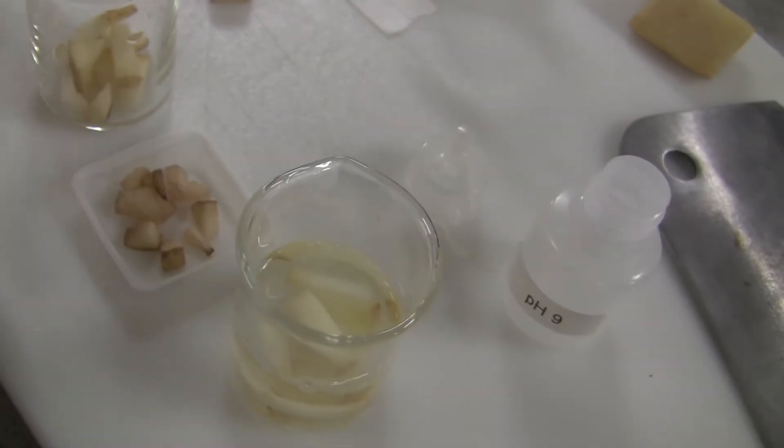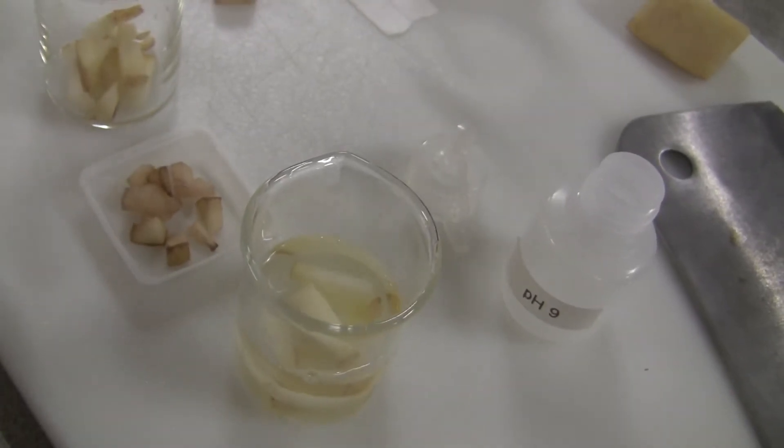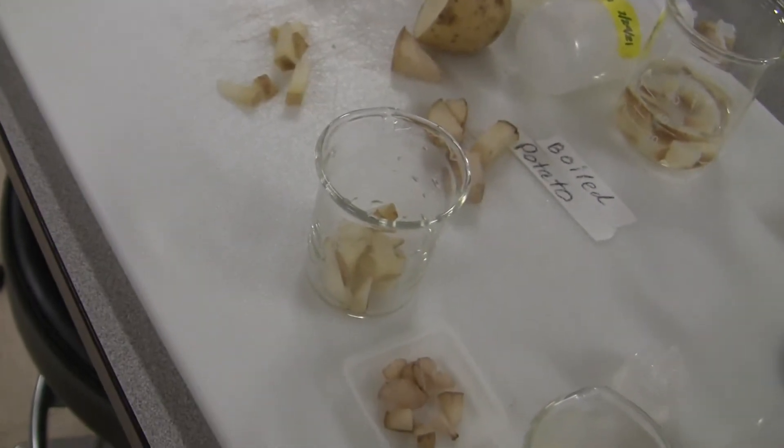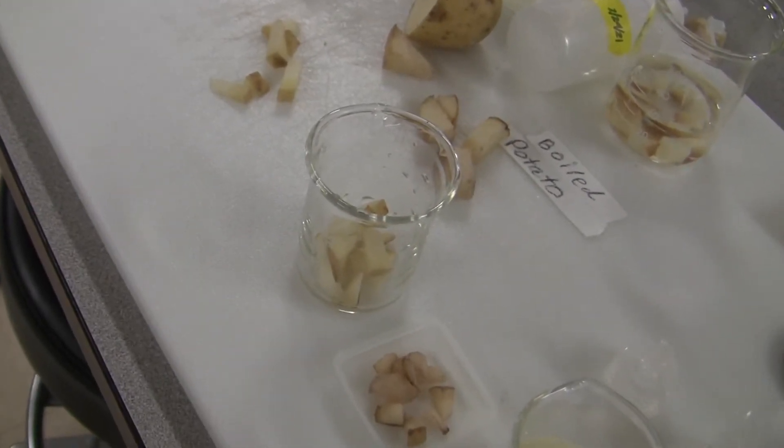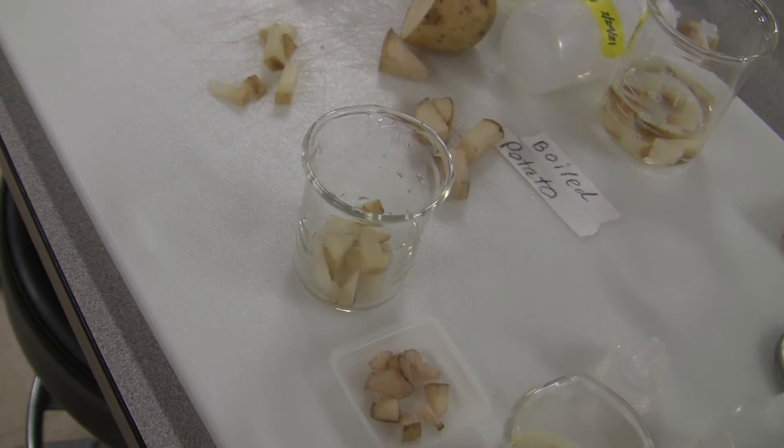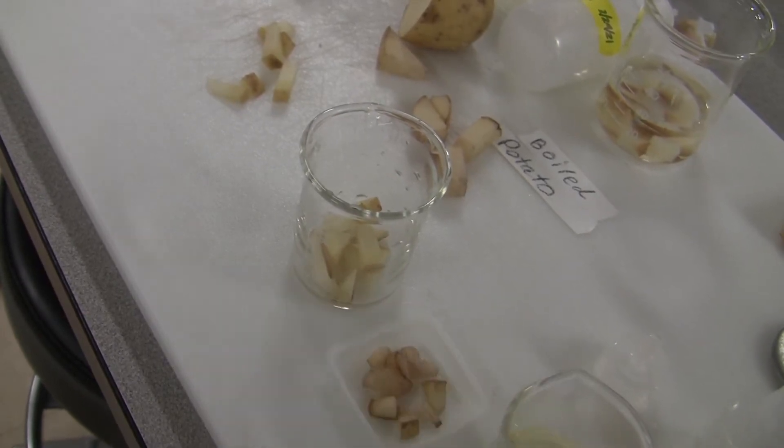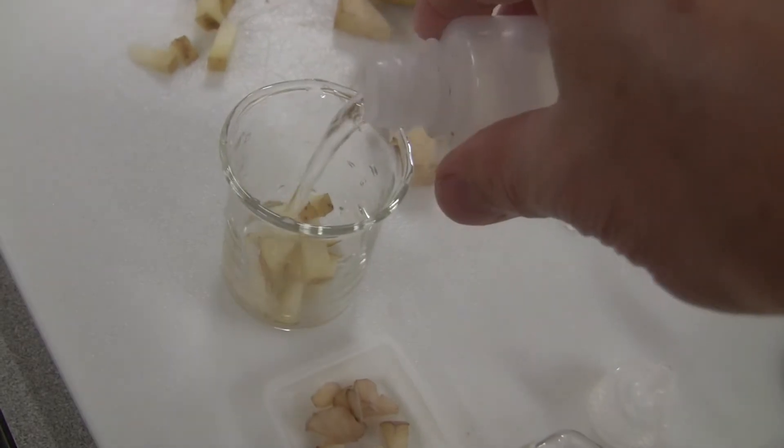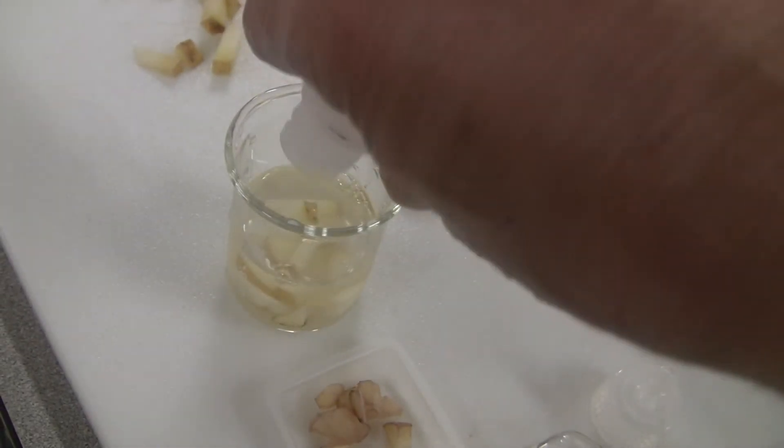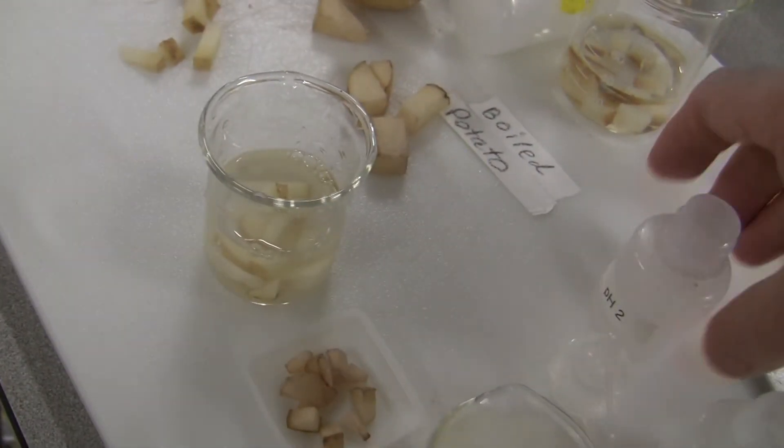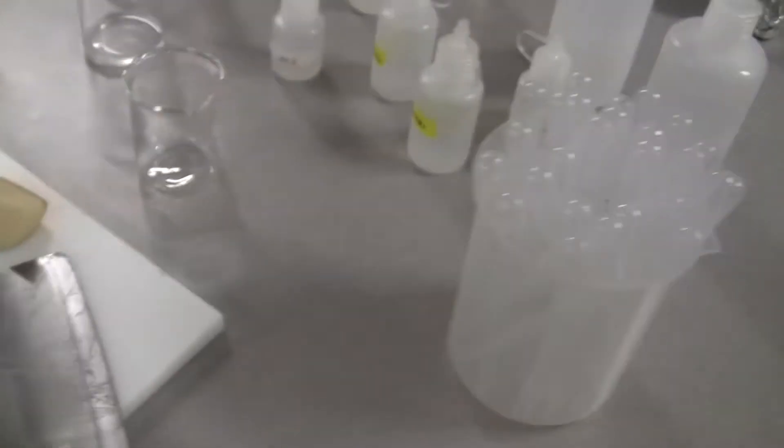And then this one, pH of 2, very acidic. That one was very basic and then this one is very acidic. Again, they both have equal amount of potato. So here is one. And then after a while, after a few minutes, I'll wait and add hydrogen peroxide.